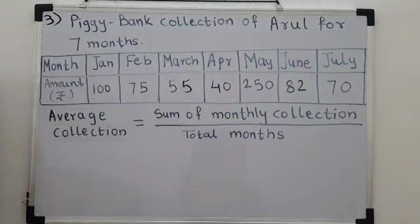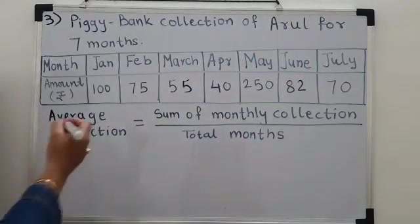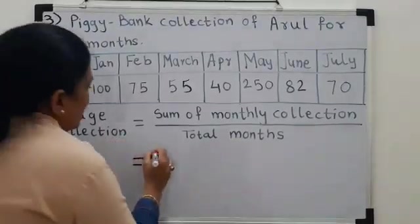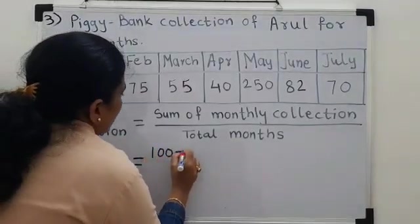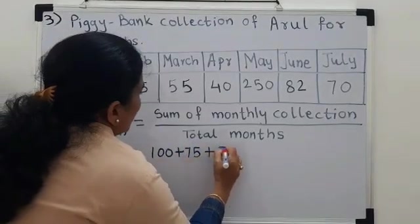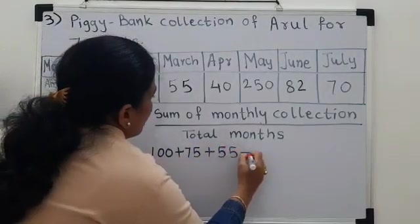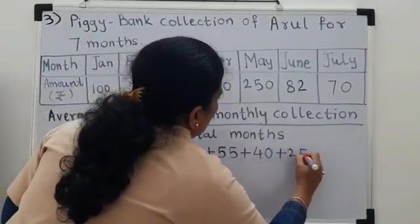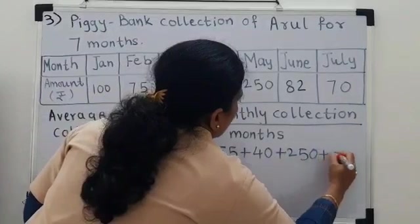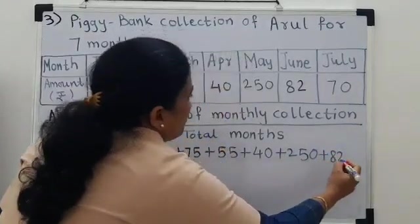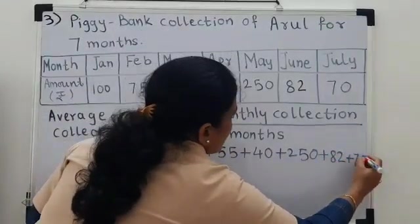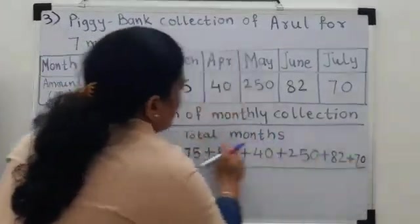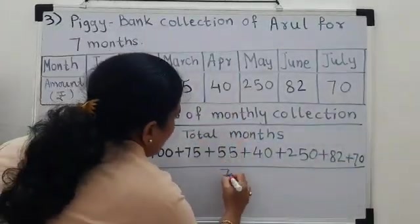Let us calculate the average amount. So, here goes the calculation. 100 plus 75 plus 55 plus 40 plus 250 plus 82 plus 70 upon total number of months are 7.